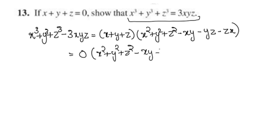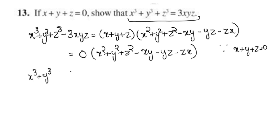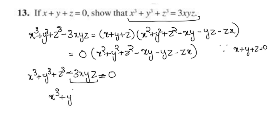Since x plus y plus z is equal to 0, substituting into the identity gives x³ plus y³ plus z³ minus 3xyz is equal to 0. Therefore x³ plus y³ plus z³ is equal to 3xyz.